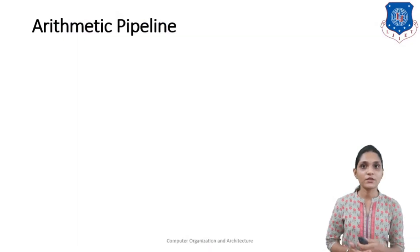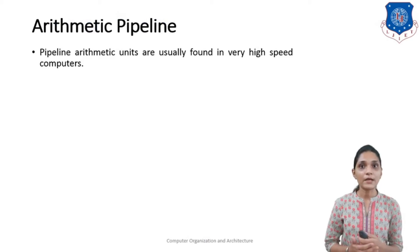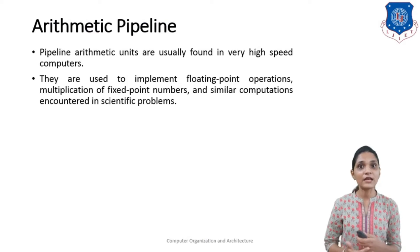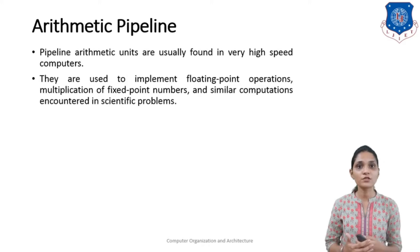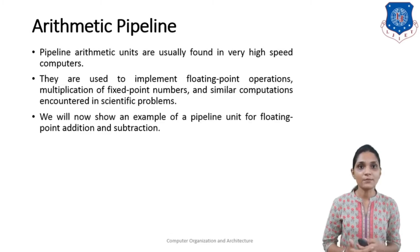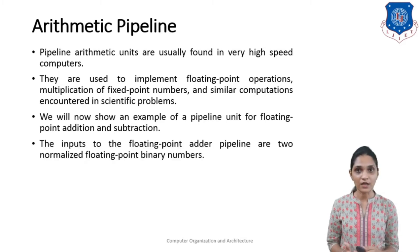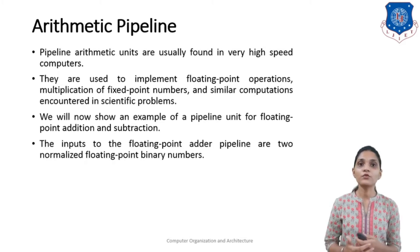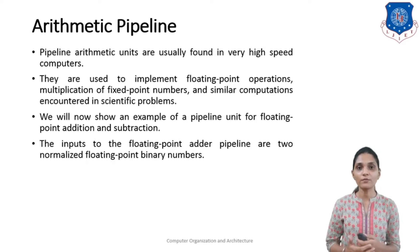Arithmetic Pipelining units are usually found in very high speed computers. They are used to implement floating point operations, multiplication of fixed point numbers, and similar computational tasks encountered in scientific problems. We will now see the example of a pipelining unit for floating point addition and subtraction. The input to the floating point adder pipeline are two normalized floating point binary numbers.